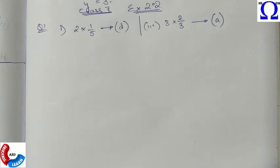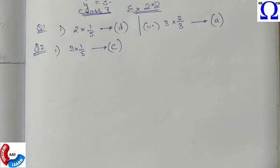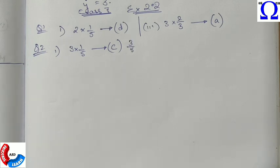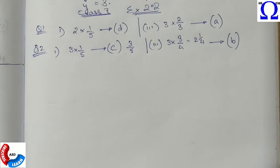Now let us move on to question number 2. It is the same kind of question like question number 1. We need to search what diagram will be coded for 3 into 1 by 5. So C is actually 3 by 5. This is actually the practical understanding of our fractions.